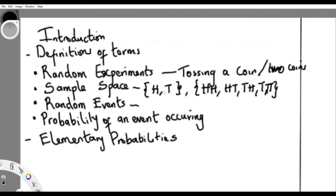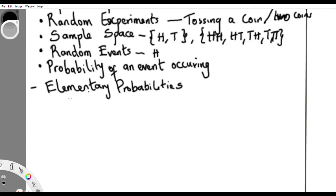Now, what is a random event? A random event is what you get when you carry out an experiment — the specific outcome you get exactly when you carry out the experiment. For example, if I toss a coin I only get one outcome — either head or tail — and that one that shows is the random event.